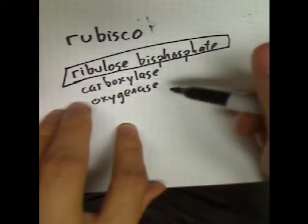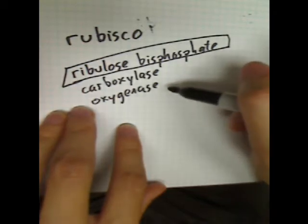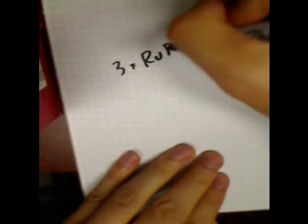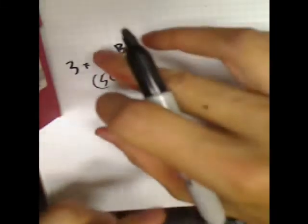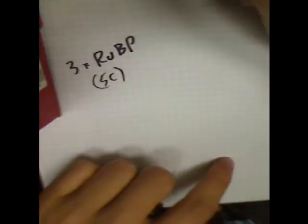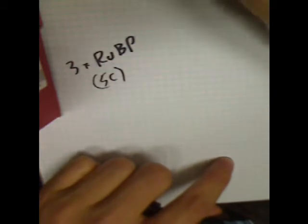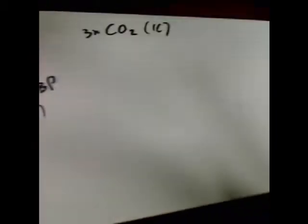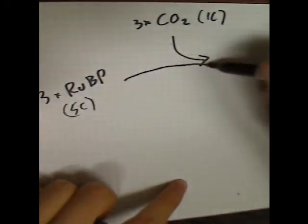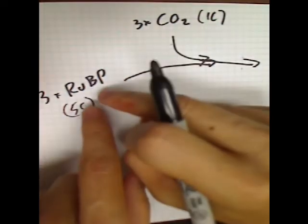Rubisco can also oxygenate RuBP — add an oxygen to it — but we'll talk about that reaction later. For the normal Calvin cycle, we start with three molecules of ribulose bisphosphate, or RuBP, which has five carbons. So doing the carbon bookkeeping, we have 15 carbons total. What Rubisco does is take three carbon dioxides — each with one carbon — and add those carbon dioxides onto each of those RuBP molecules.